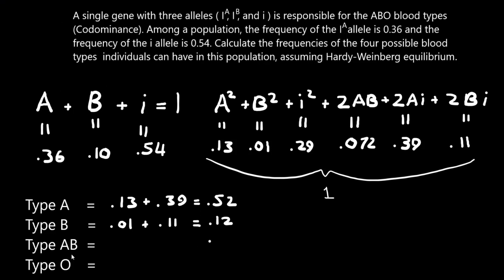So type AB, there's only one genotypic frequency that corresponds to someone who has a dominant A allele and a dominant B allele. And that's basically 7%. And type O, there's only one for this as well, an individual with two recessive I alleles. They have no antigens on their cells.